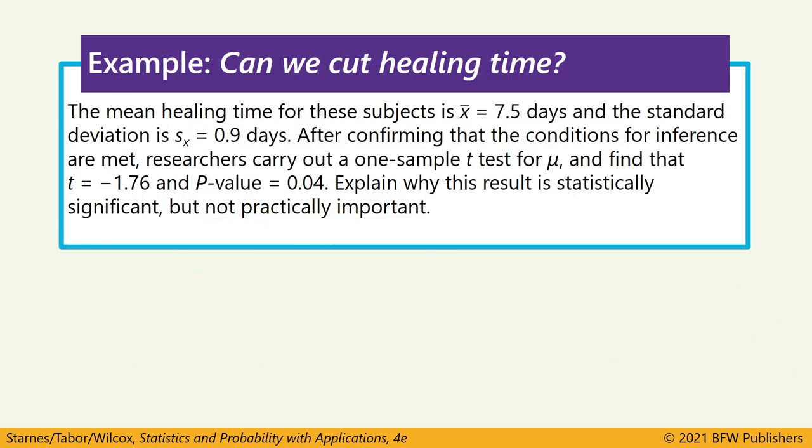When we collect our data, we find that the sample statistic, the average of our sample, is 7.5 days with a standard deviation of 0.9. When we calculate the test statistic, we get a T-score of negative 1.76 and a p-value of 0.04. Now this question is asking us to answer something different, saying why is this a statistically significant result but not practically important?